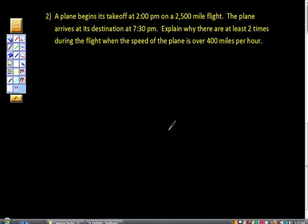This is another Mean Value Theorem problem from AP Calculus AB. A plane begins its takeoff at 2 p.m. on a 2,500-mile flight. The plane arrives at its destination at 7:30 p.m. Explain why there are at least two times during the flight when the speed of the plane is over 400 miles per hour.